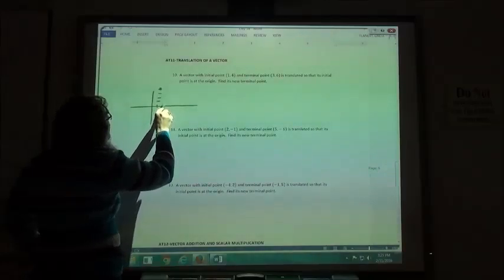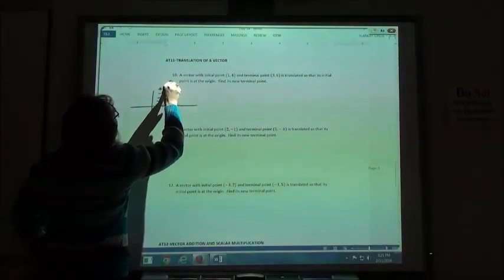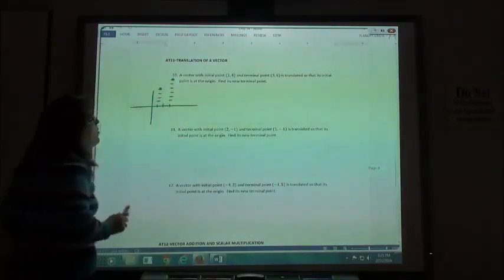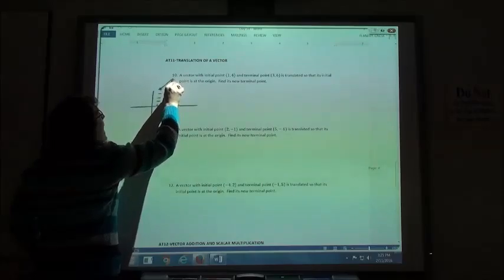My end point is at 1, 2, 3, 1, 2, 3, 4, 5, 6. My terminal point or end point would be at 3, 6 and my vector would go like that.